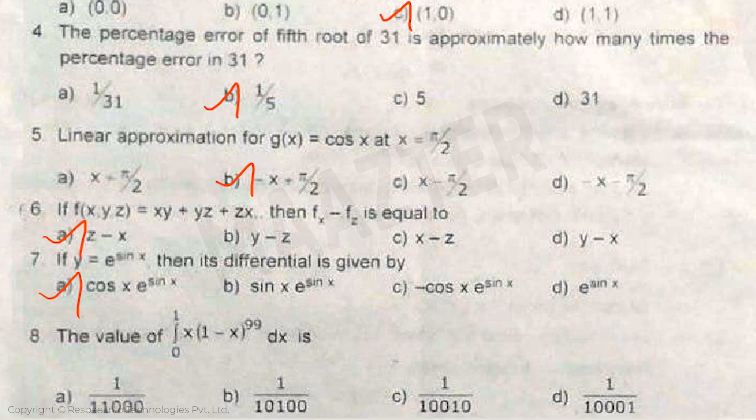Question 8: The value of integral from 0 to 1 of x(1 - x)^99 dx is... Answer is option B.